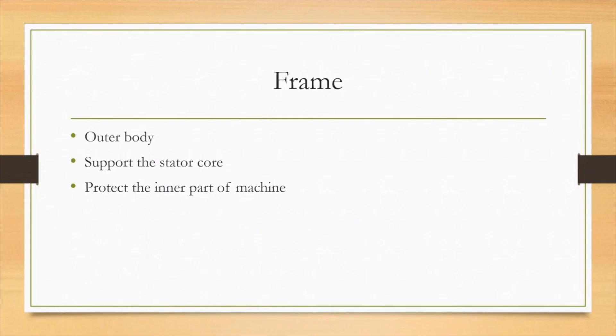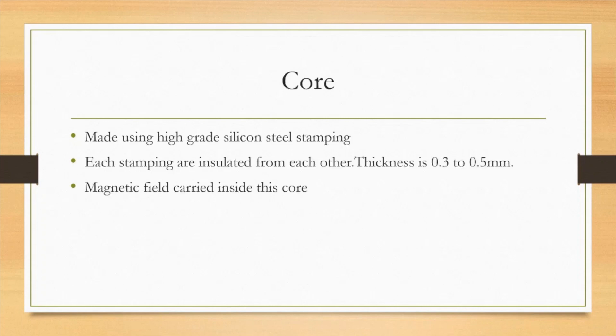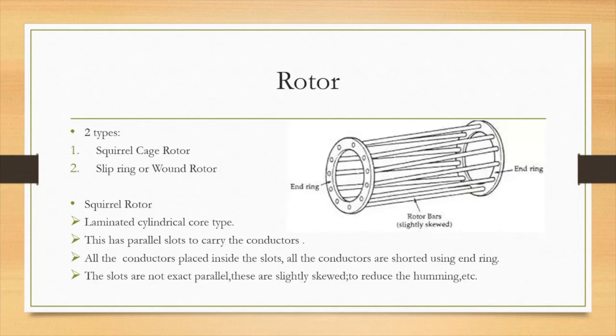A frame is the outer body. It supports the stator core and protects the inner part of the machine. The second part is the core. The core is made of high-grade silicon steel stamping. Each stamping is insulated from each other with a thickness of 0.3 to 0.5 millimeter. Inside this core, the magnetic field is carried.